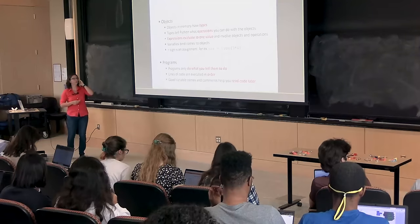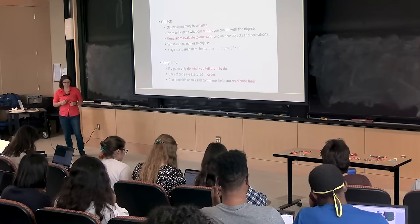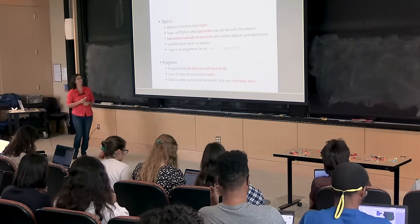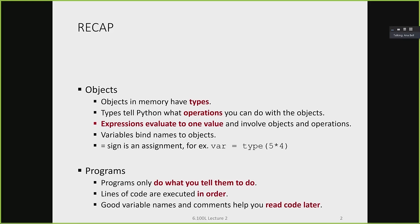Before moving on, let's do a quick recap of last lecture to make sure we're all on the same page. We introduced the idea of an object, and every object in Python has a specific type. The type tells Python what kinds of things you're allowed to do with that object. Once you have objects, you can assign them to variables, which bind a name to the object in memory.